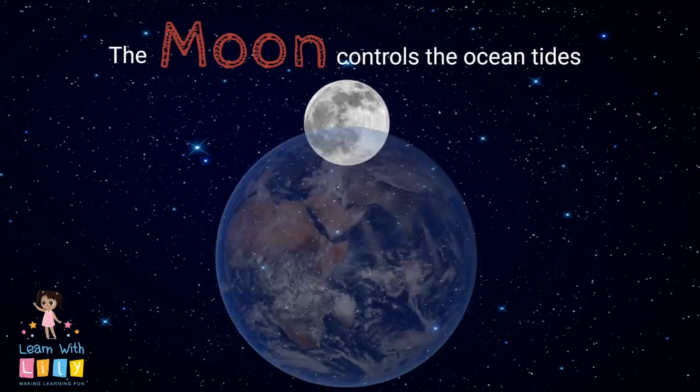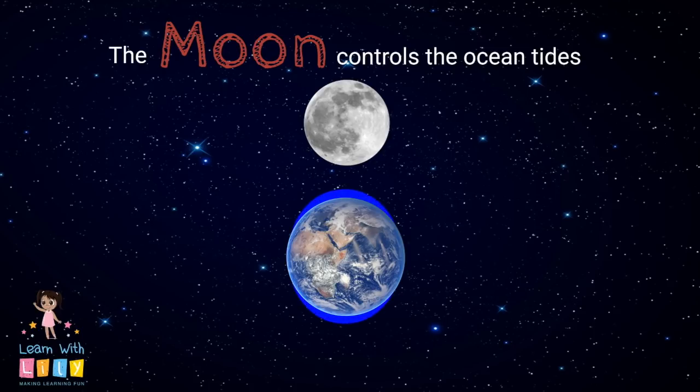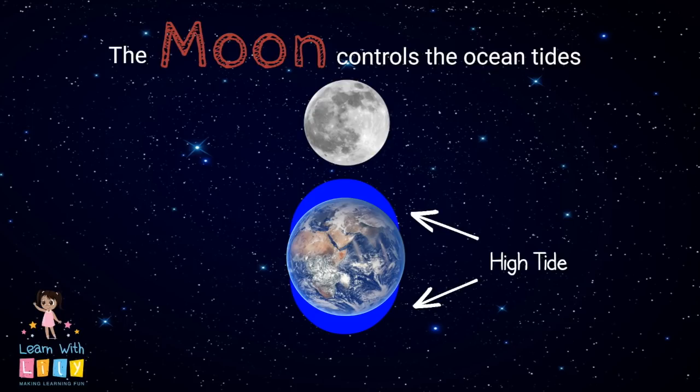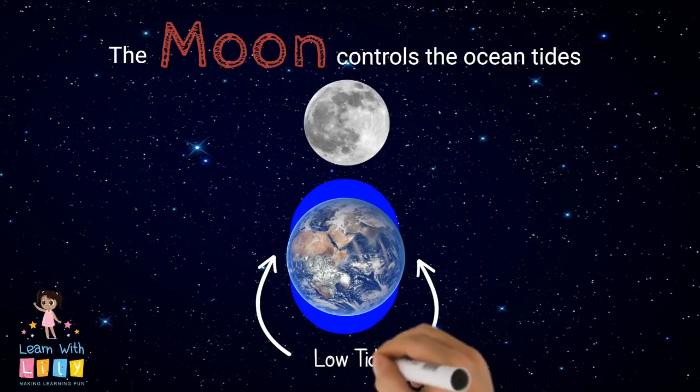The Moon controls the ocean tides. The gravitational pull of the Moon creates two bulges in the ocean, one facing the Moon, and on the opposite side away from the Moon. Those are high tides. Low tides are on the opposite side.